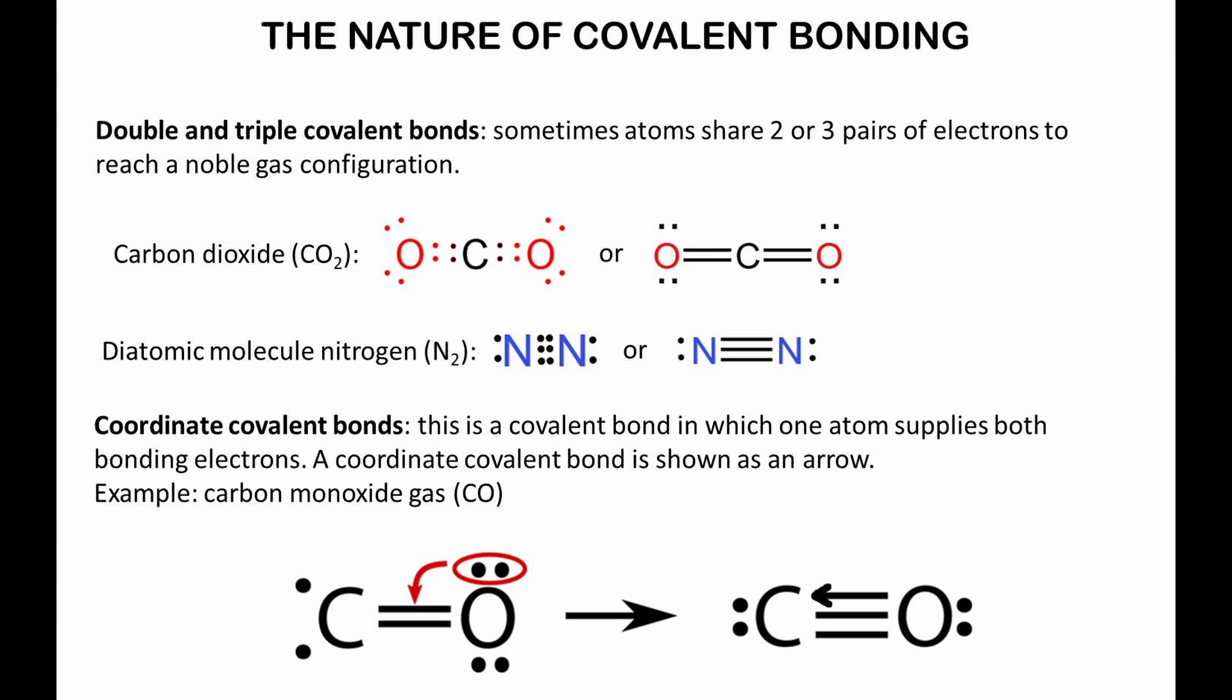There is another covalent bond that is different from the bonds in water or ammonia and nitrogen. It's a coordinate covalent bond. Carbon monoxide gas is held together by this type of bond. The carbon atom needs to gain four electrons to reach a noble gas configuration.